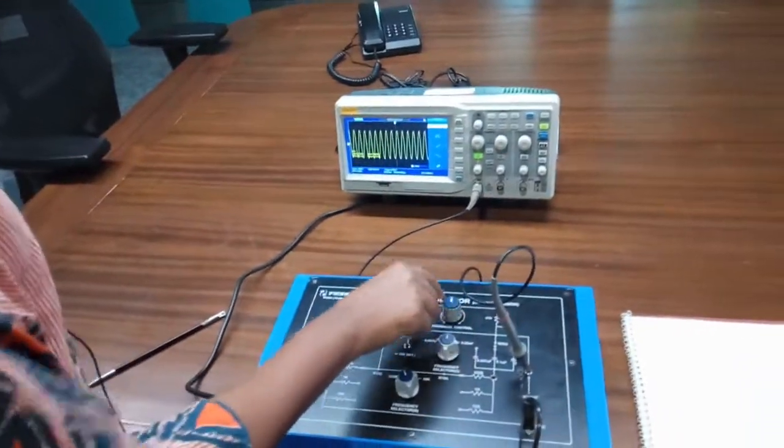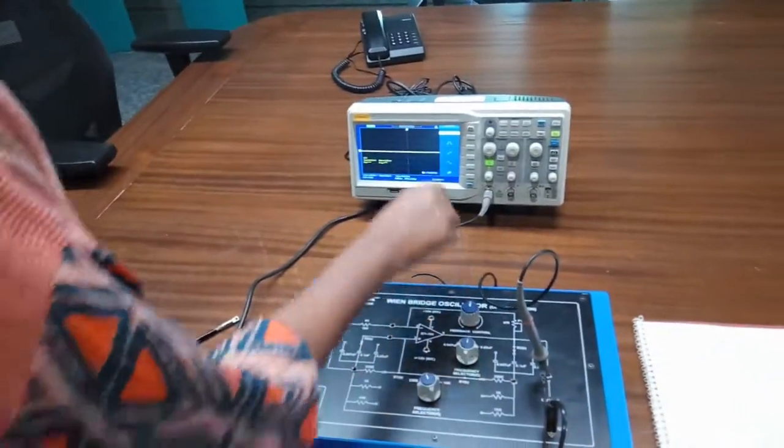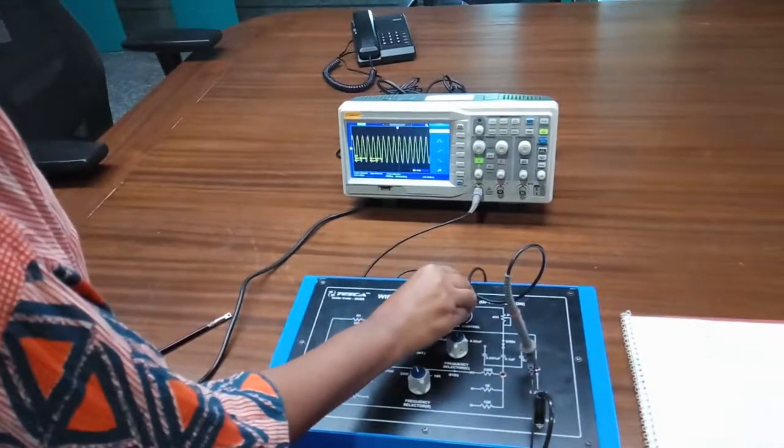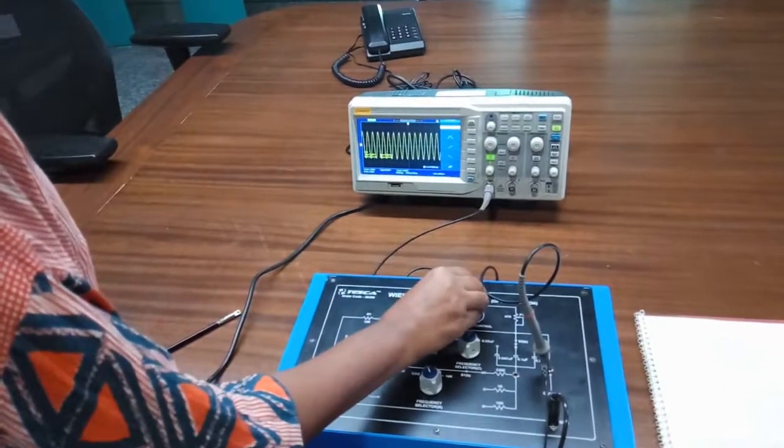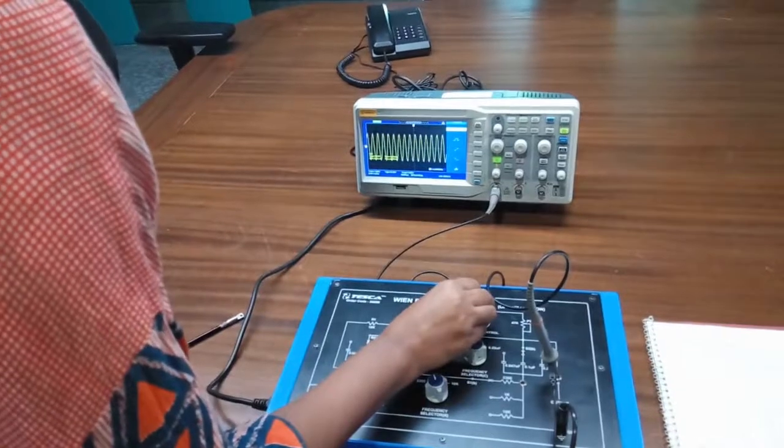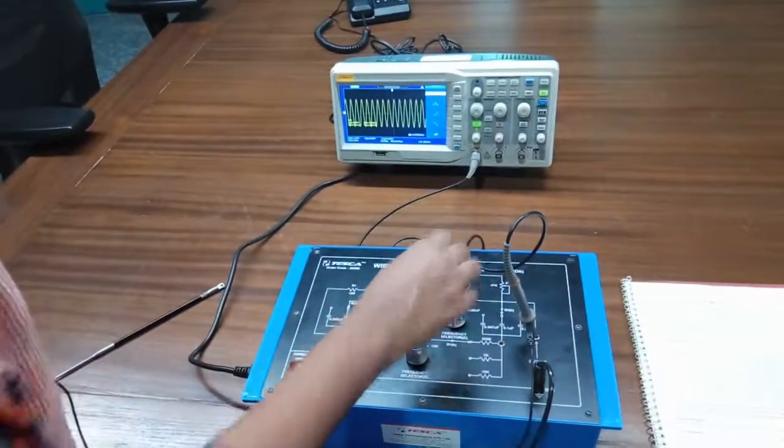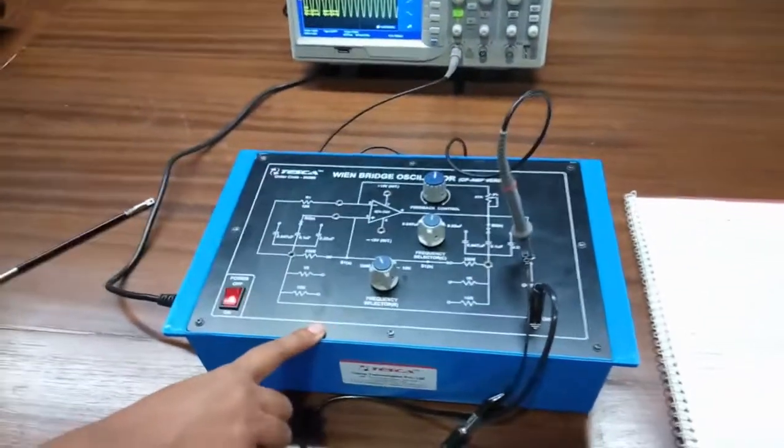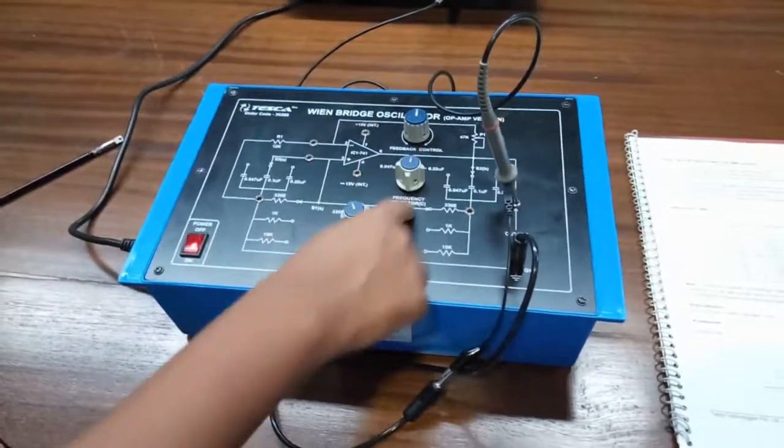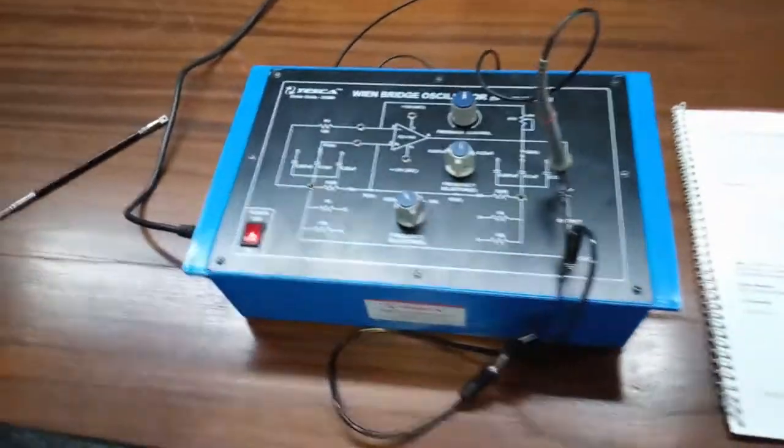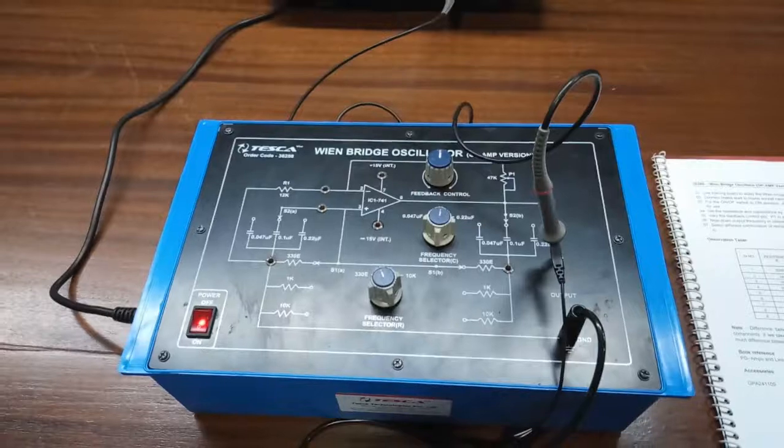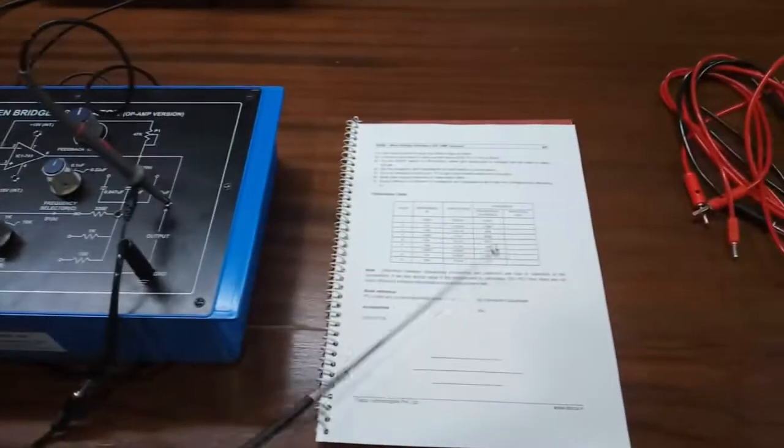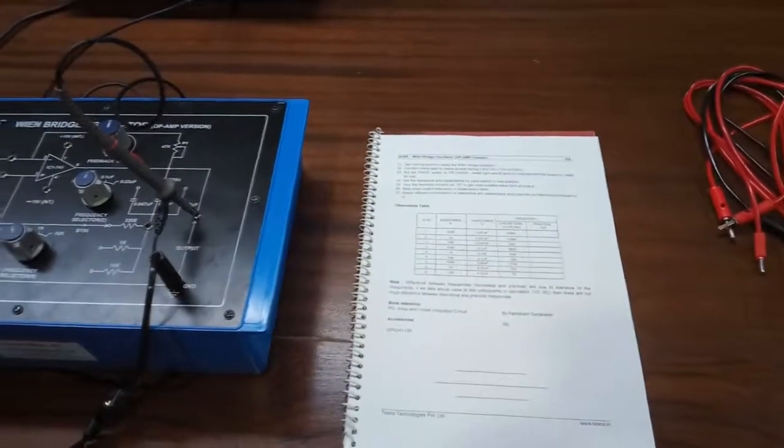Now vary this potentiometer to get the clean waveform, and the value of frequency is 4.45 kilohertz. Like this, note down the frequency for every combination of resistor and capacitor and compare it with the theoretical value that is given in the observation table.